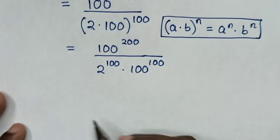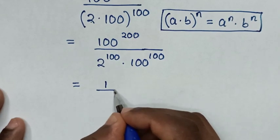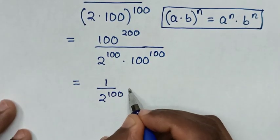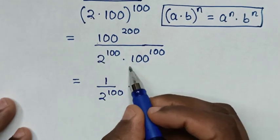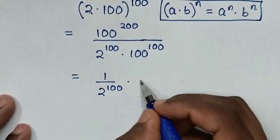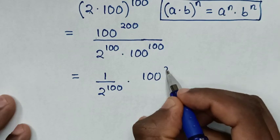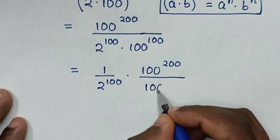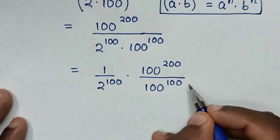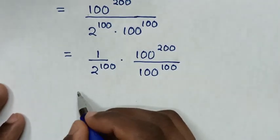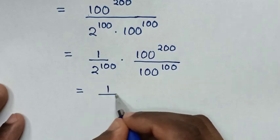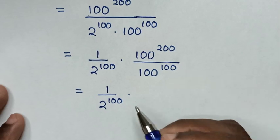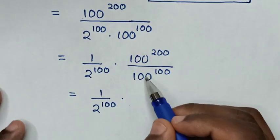Then, in the next step, it will be equal to 1 over 2 power of 100, times — this over this — so 100 power of 200 over 100 power of 100. Then it will be equal to 1 over 2 power of 100, times — and here we have division of exponents with the same base.